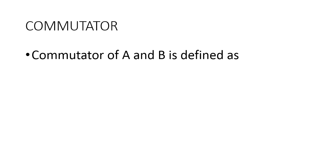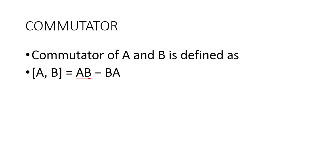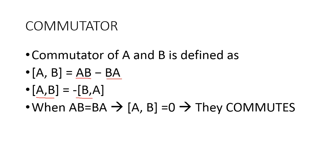The commutator of A and B is defined as [A, B], which is equal to AB minus BA. Another main relation is that the commutator of A and B is related to the commutator of B and A: [A, B] = negative of [B, A]. When AB equals BA, the commutator becomes zero, and it is said that A and B commute.